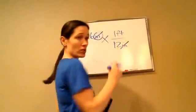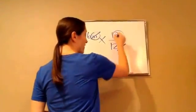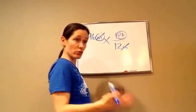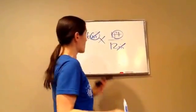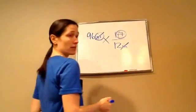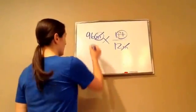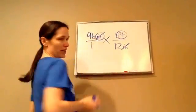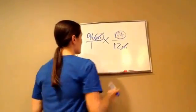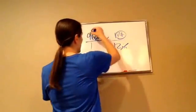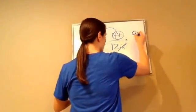Inches and inches cross out. We have feet left, which is what we want — so we know we've set it up right. We're just going to put that over 1. Now let's do this: 96 times 1 is 96, and I've got my feet.